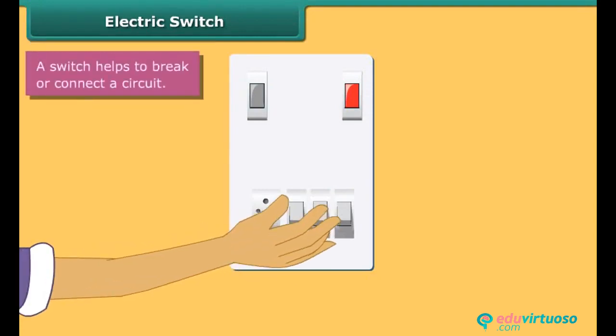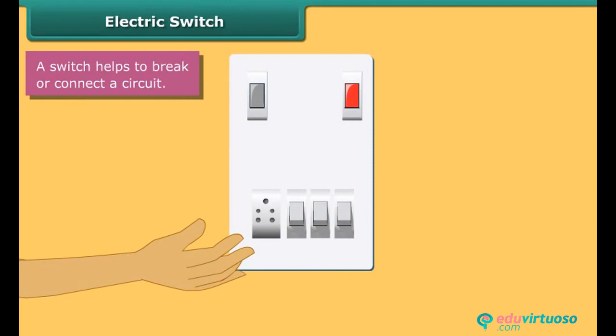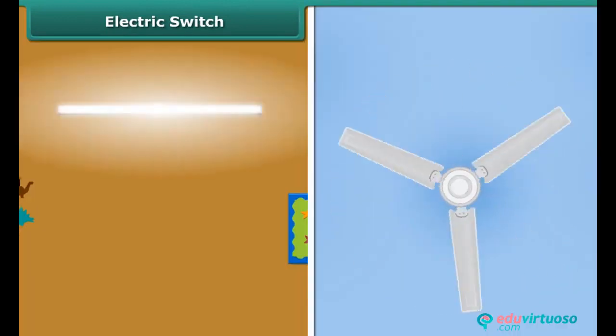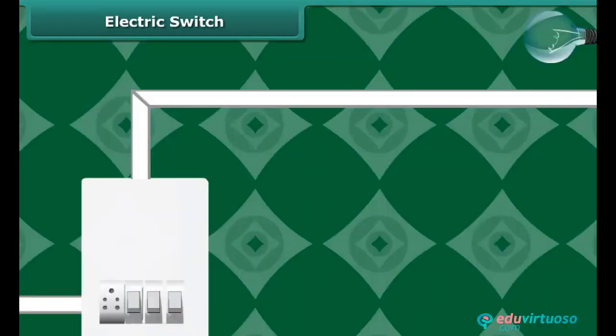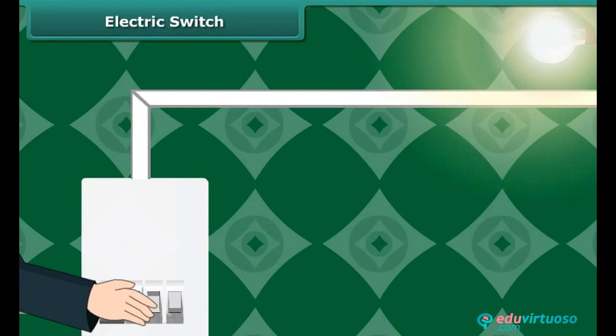We put a switch on or off whenever we want to use or not use the electric appliance such as the fluorescent tube, fan, AC, etc. A switch for a bulb is pressed down to complete a circuit. The bulb glows.